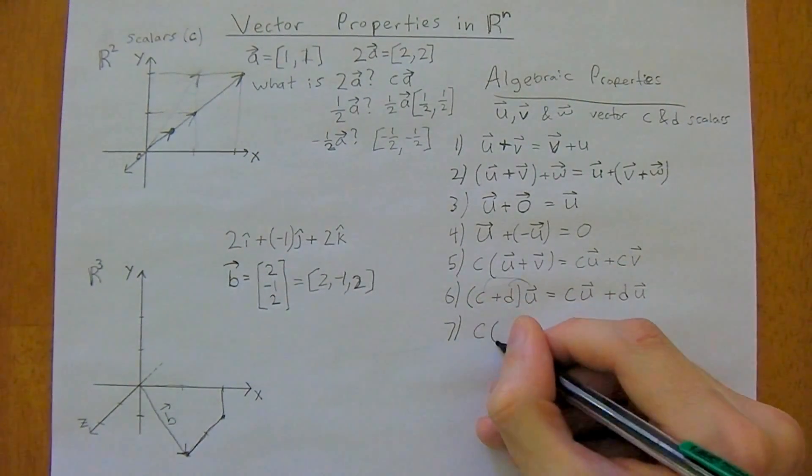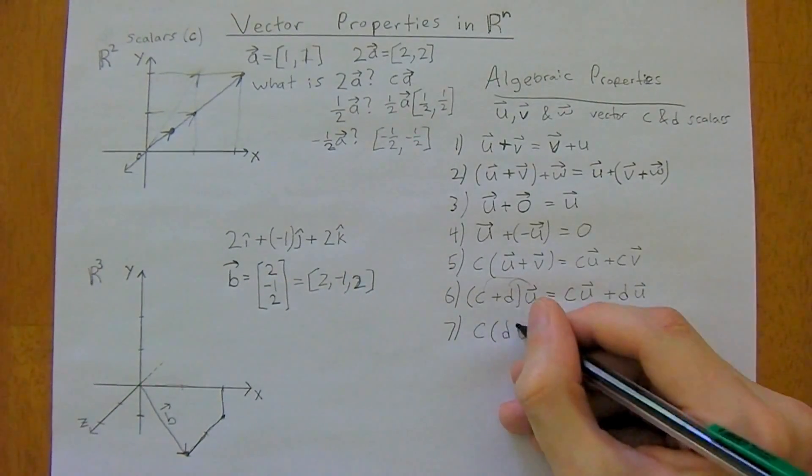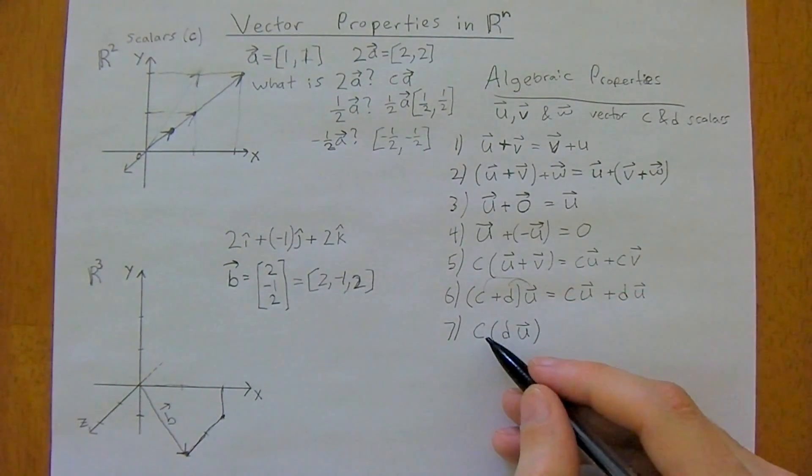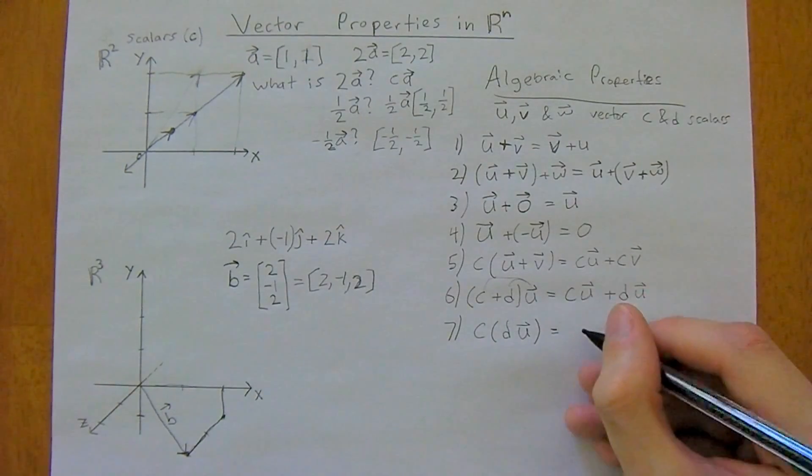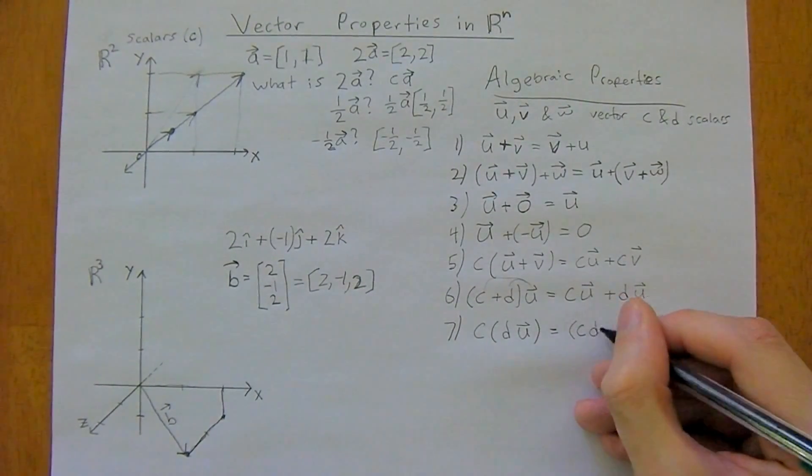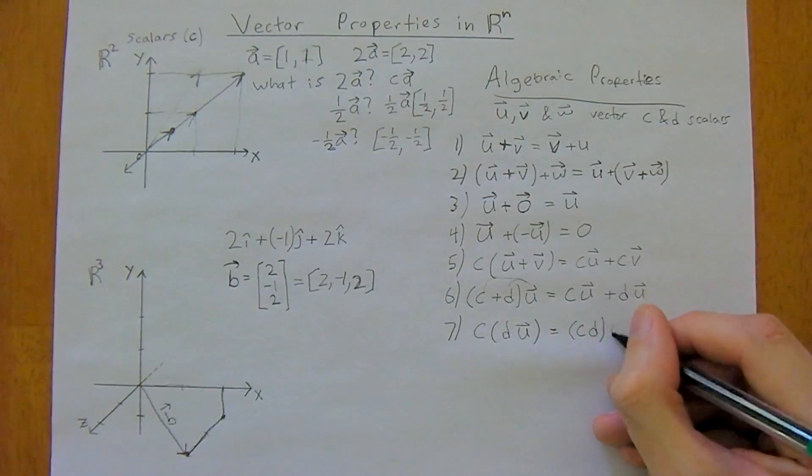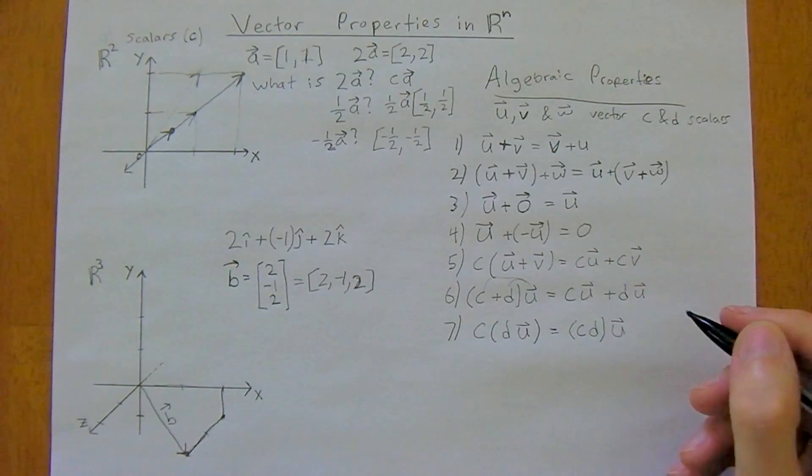So c times du, so scalar scalar vector is the same as saying cd, so we just group the two scalars together, times vector u.